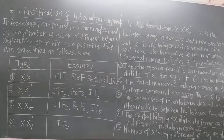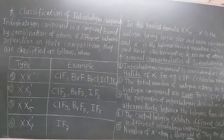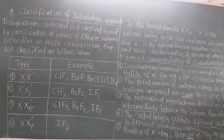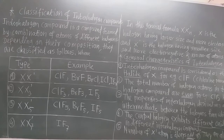Now consider the classification of interhalogen compounds. Depending on their composition, they are classified into four main types. Here I write the general formula of interhalogen compounds.